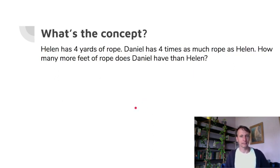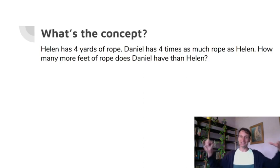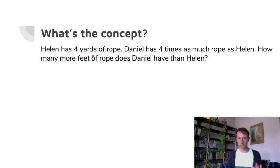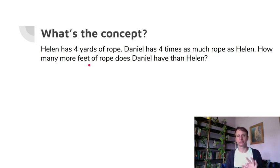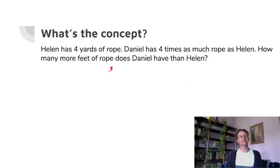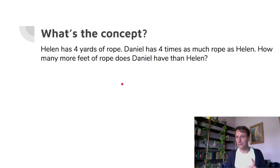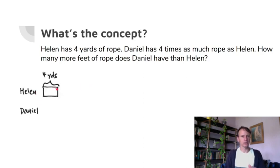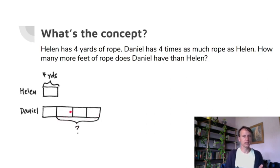Next: Helen has four yards of rope. Daniel has four times as much rope as Helen. But notice — we're given yards, and the question asks how many more feet of rope does Daniel have than Helen. Let's draw a tape diagram with Helen and Daniel. Helen has four yards; Daniel has four times as much, so his bar covers four groups of four.